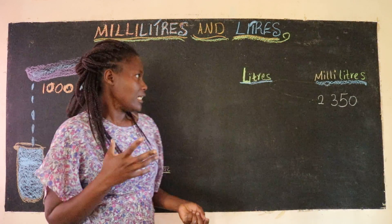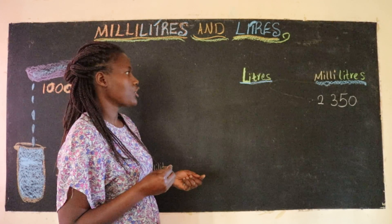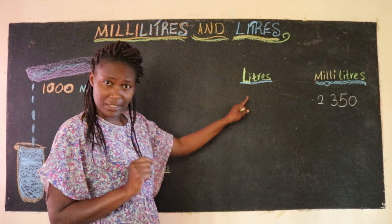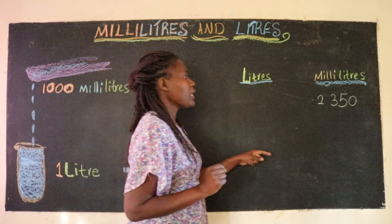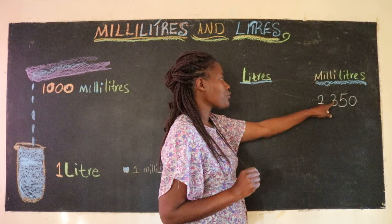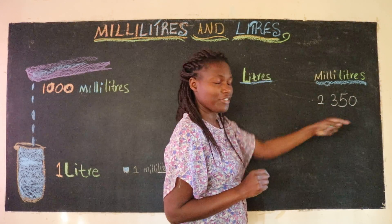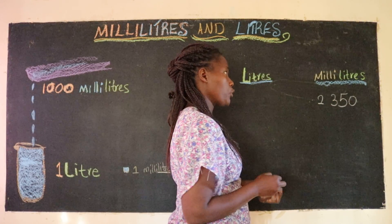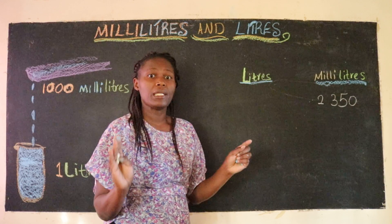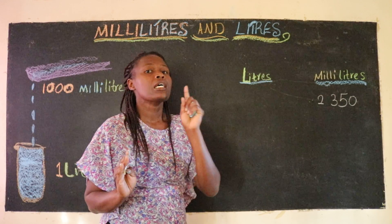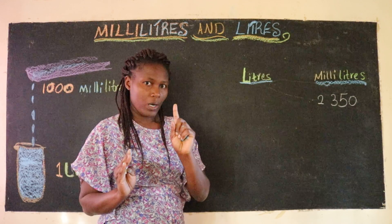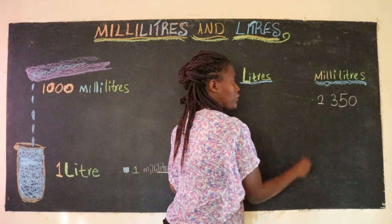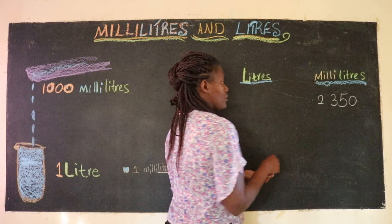So let's see how we change milliliters into liters. Here we have 2,350 milliliters. We already know that a thousand milliliters is equal to one liter, so we separate this into thousands.